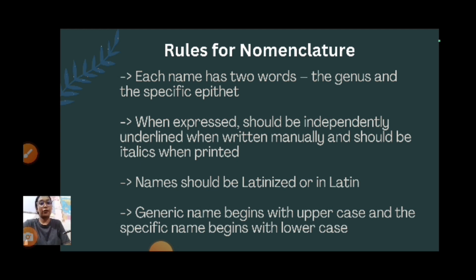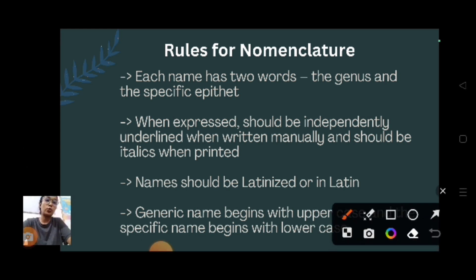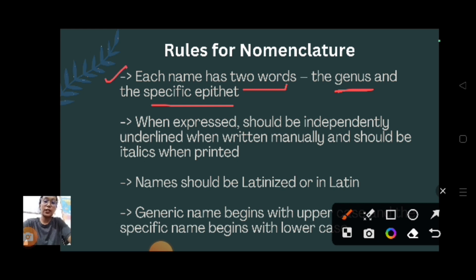There are some rules you have to follow while writing a scientific name. Each name has two words - the first will be the genus or generic name and the last word will be specific epithet or species name. When expressed, each should be independently underlined when written manually, and should be in italics when printed.